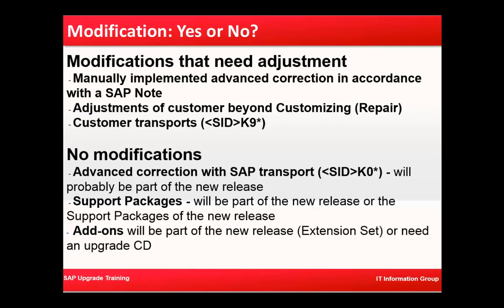The customer transport is something that will have the naming convention of the SID. The SID is like a customer identification number. For example, in your landscape you have your dev system with SID DE1, your QA system QE1, and your production system PE1. So D can indicate dev, Q can indicate your quality system, P can indicate your production system — that is the format for SIDs.